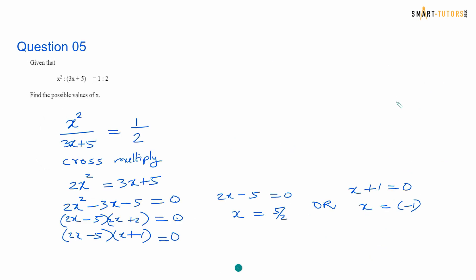Question number 5. Given that x squared is 2, 3x plus 5 equal 1 is to 2. Find the possible value of x. x squared is a ratio, so x squared over 3x plus 5 equals 1 over 2. Cross multiply, you get a quadratic equation. Factorize. Then that gives 2x minus 5 can be 0, x plus 1 can be 0. So you've got two answers for x: x equal 5 by 2, x equal minus 1. The trick is the ratio, you need to write the question in a fraction format, then cross multiply.